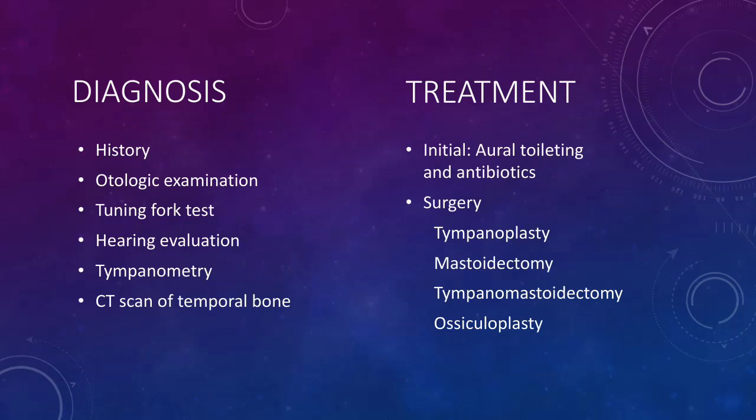The diagnosis of cholesteatoma can be made by a proper history and otologic examination along with tuning fork test, hearing evaluation, tympanometry, and CT scan or MRI of the temporal bone. The treatment includes, in the initial phases, aural toileting and antibiotic therapy, but later on surgery might be needed. We can do tympanoplasty — a surgery to remove the cholesteatoma from behind the eardrum and repair the eardrum perforation by placing a patch over the hole. We can also do mastoidectomy — a surgery to remove the cholesteatoma from the mastoid bone. Tympanomastoidectomy is done when the cholesteatoma involves both the middle ear space and the mastoid space. Ossiculoplasty involves repair or reconstruction of the three ossicles of the middle ear that are damaged due to cholesteatoma.